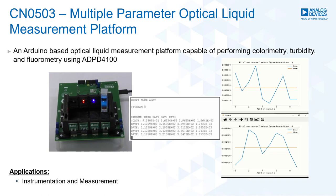Last but not least is the CN0503, an Arduino-based optical liquid measurement platform capable of performing colorimetry, turbidity, and fluorimetry while demonstrating the power of the ADPD4100. The image on the left shows a shot from the CN0503's demo video. In that demo, the fluorescence of tonic water is measured and the result is plotted through a Python code, as shown on the image on the right. Despite benchtop instrument performance, the CN0503's highly integrated electronic solution is easily adaptable to portable and handheld applications. If you're more interested in this design, do check out the CN0503's unboxing, assembly, and demo videos on this channel.